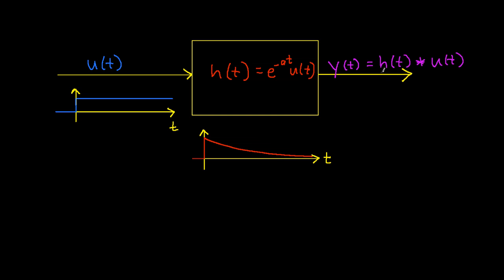The output is the impulse response h convolved with the input u of t. As an aside, this is actually a fairly realistic example in the sense that many RC circuits, which I use often as low-pass filters, have impulse responses that look like this. And quite often, I'm interested in the response of a circuit when a voltage changes abruptly from 0 up to some value.